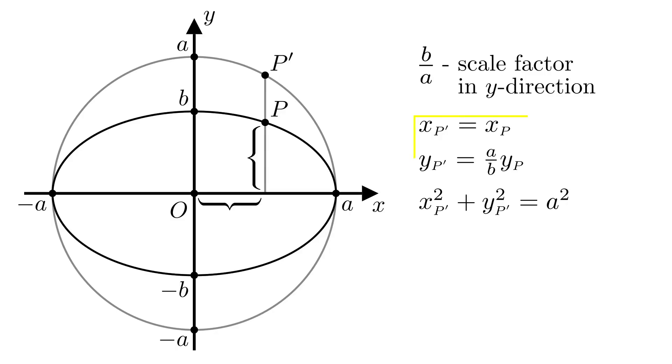We can substitute for xP' and yP', and we get that xP squared plus a over b times yP squared is equal to a squared.